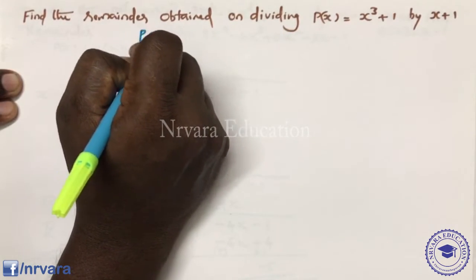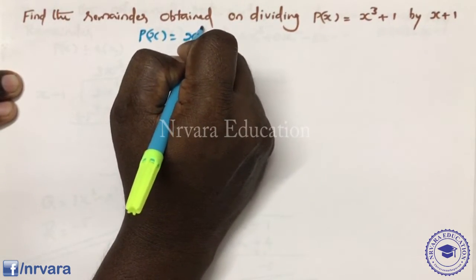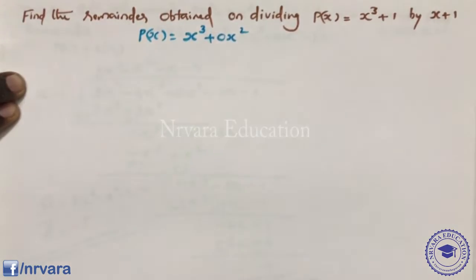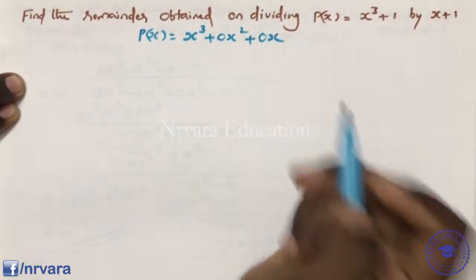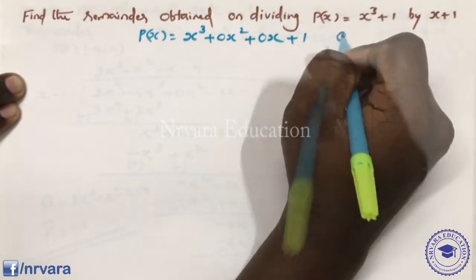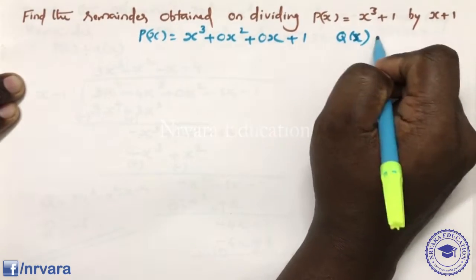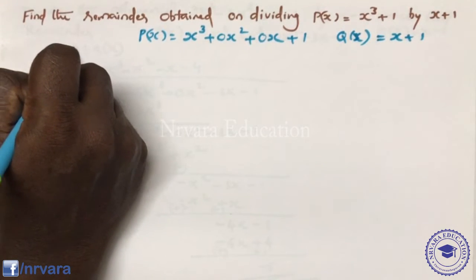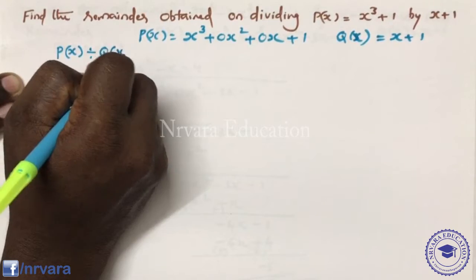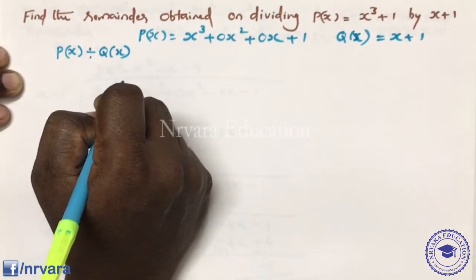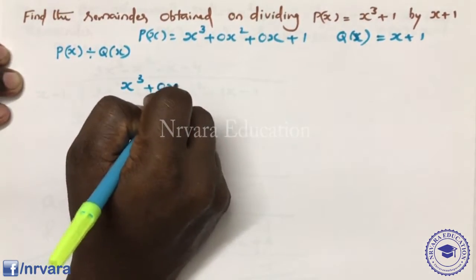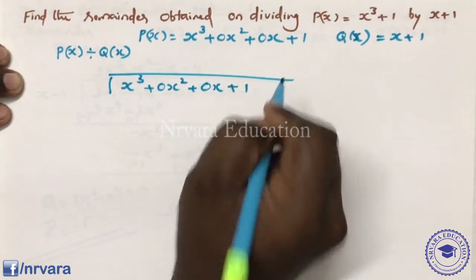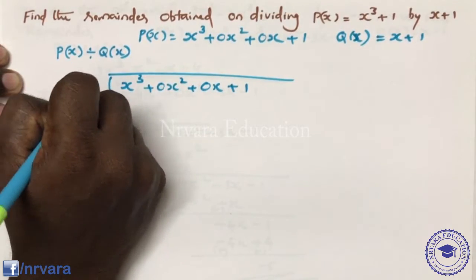Let P of x be x cube plus 1. We write it as x cube plus 0x square plus 0x plus 1. Q of x is x plus 1. We are dividing P of x by Q of x, that is x cube plus 0x square plus 0x plus 1 divided by x plus 1.